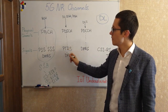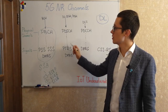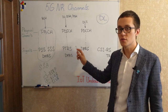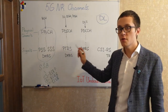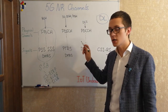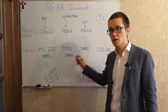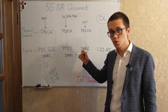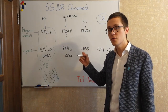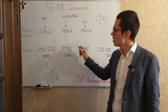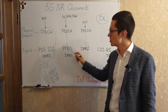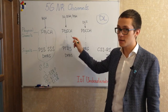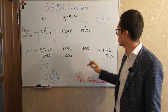In addition to that, we have a phase tracking reference signal for our shared channel for user data. This is a very important signal because it helps to estimate phase noises, and it is especially important for FR2 — for high bands and high frequencies. It performs very well for user data.